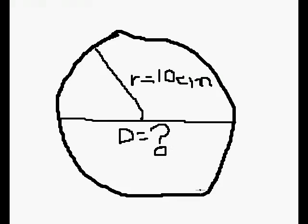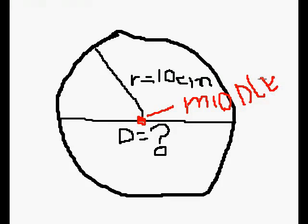How can we solve this? We can solve this with mathematics. What we know is that this here is the middle point. And this line — the radius — goes from the edge to the middle.